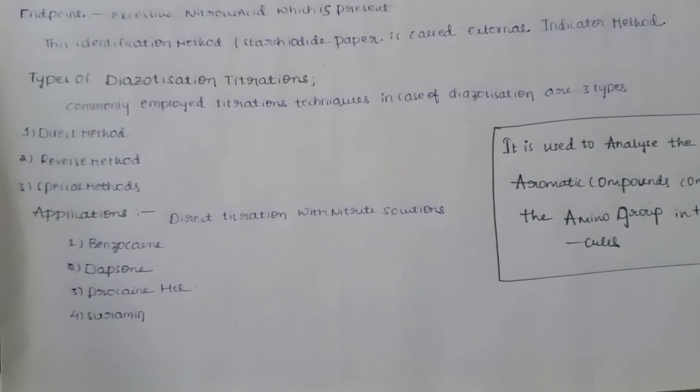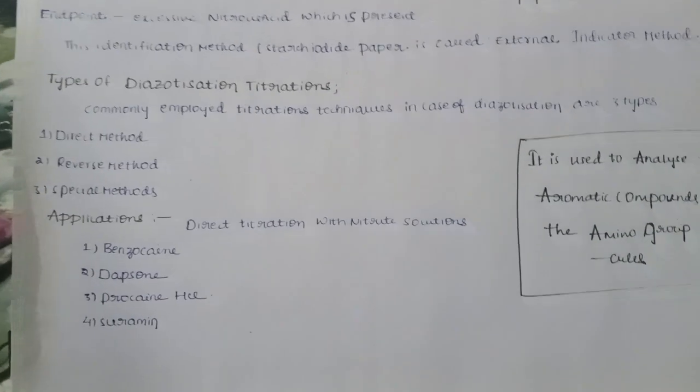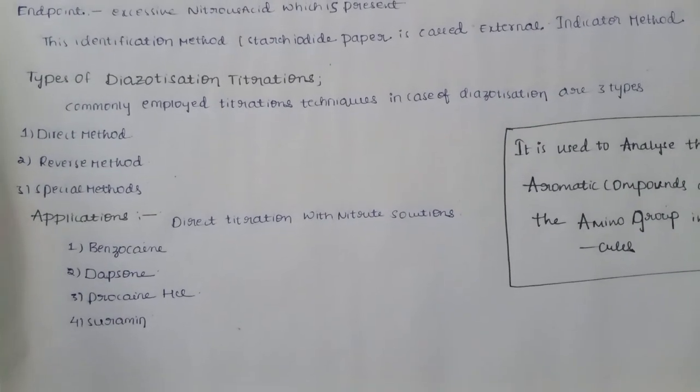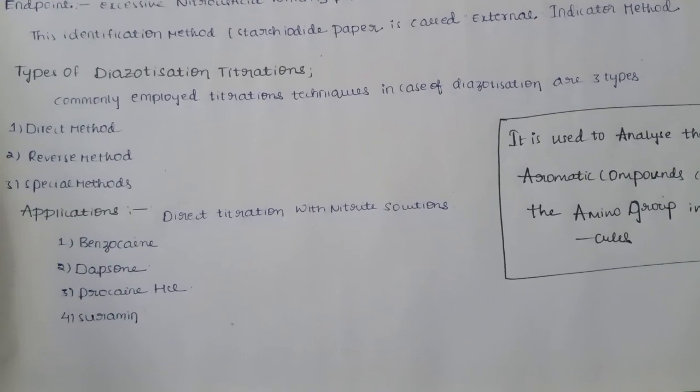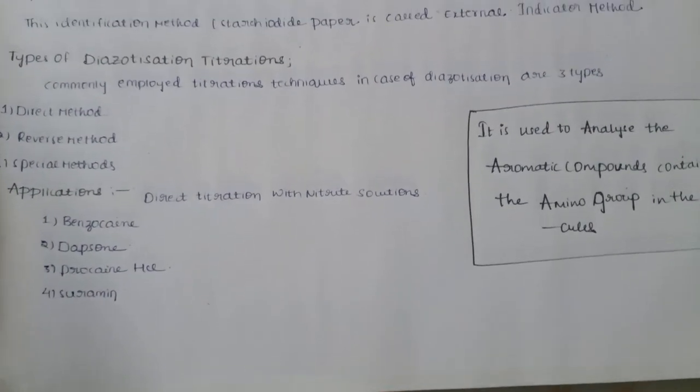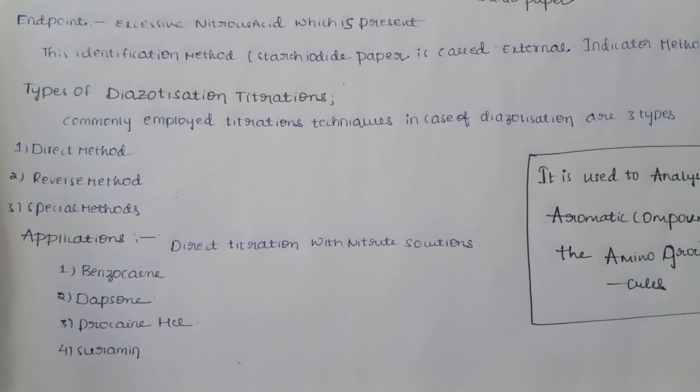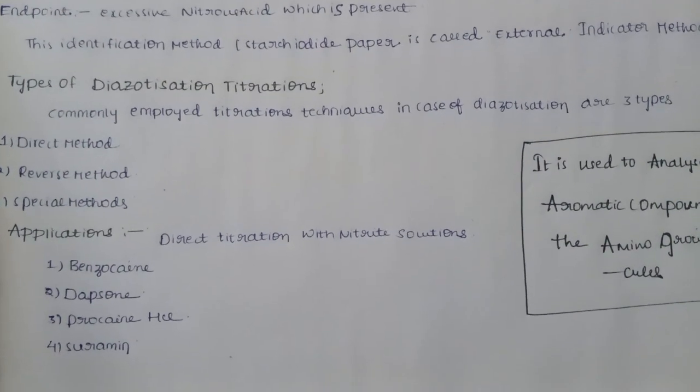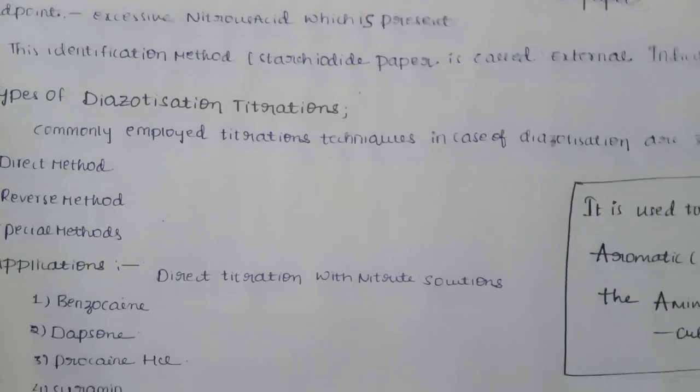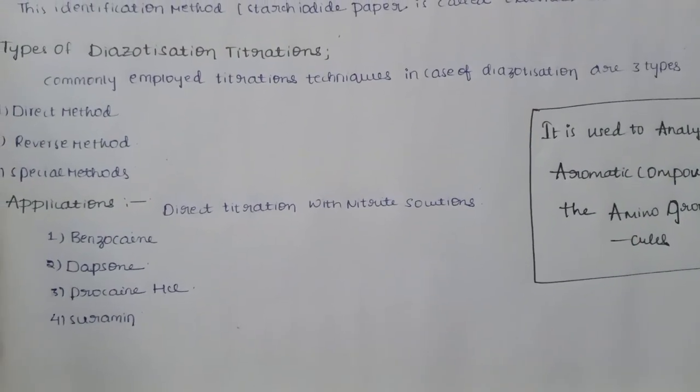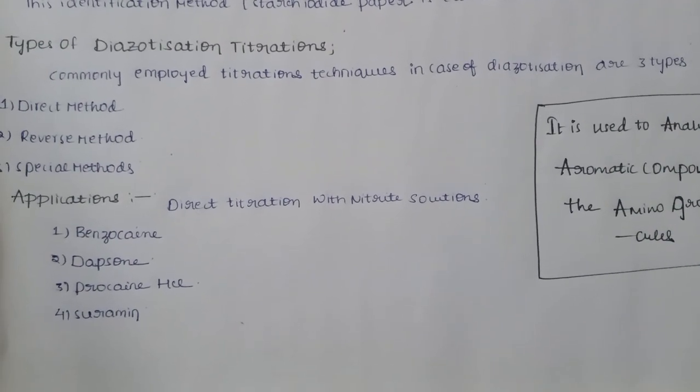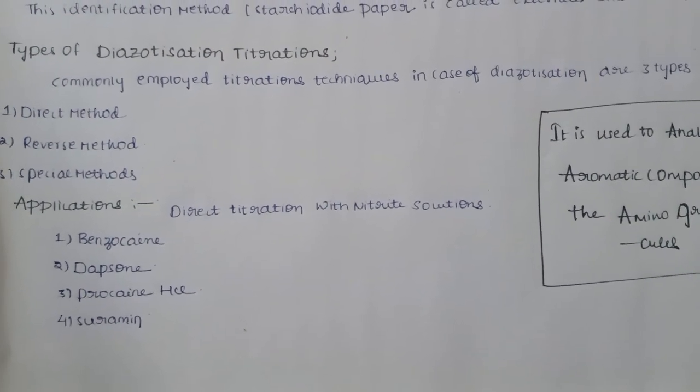Types of diazotization titration: commonly employed titration techniques are three types - direct, reverse, and special methods. Application: direct titration with nitrite solution is used to determine the drug using sodium nitrite as the titrating agent.